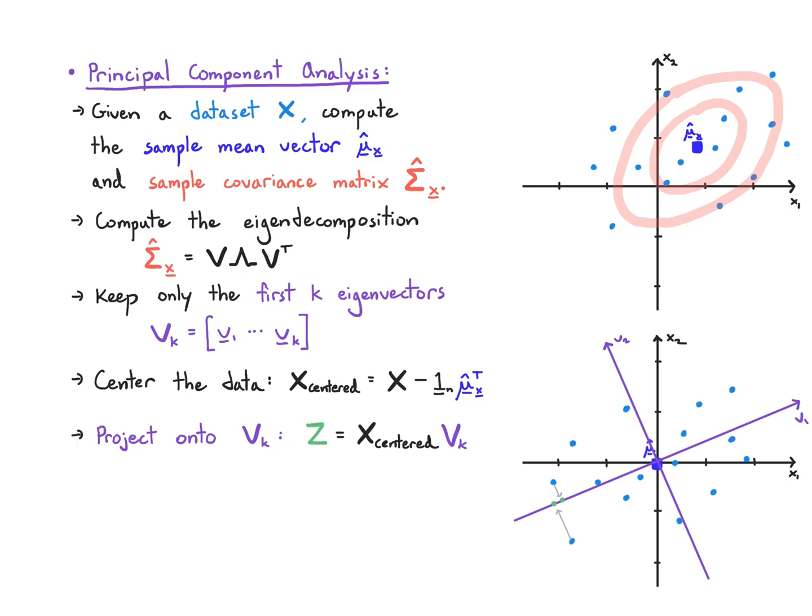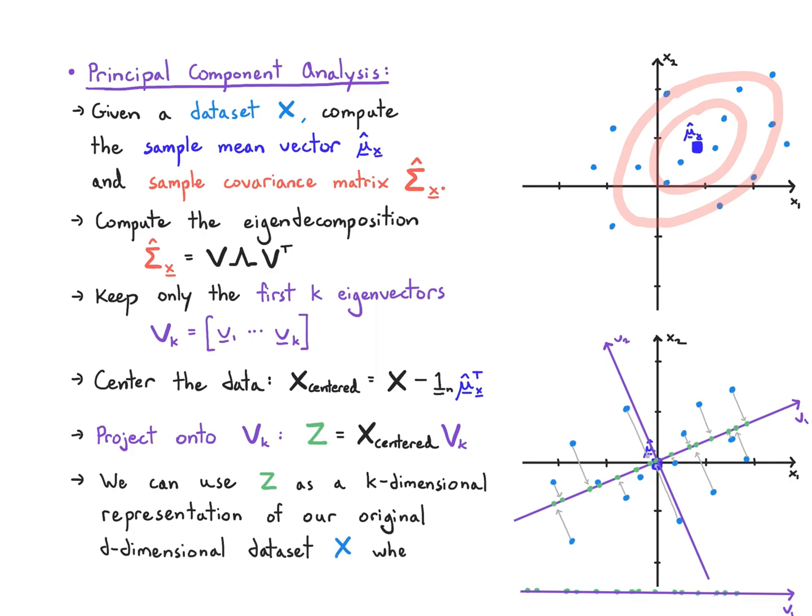Then I'm going to project onto vk. I look at this new coordinate system set up in this case by v₁ and v₂, and I only keep my first coordinate because I'm trying to reduce down to k, in this case k equals one dimension. I look at my transformed or rotated coordinate system, and that's where I'm getting those values. Now I have this new transformed v₁, these green dots as a k-dimensional representation of our original d-dimensional data set.